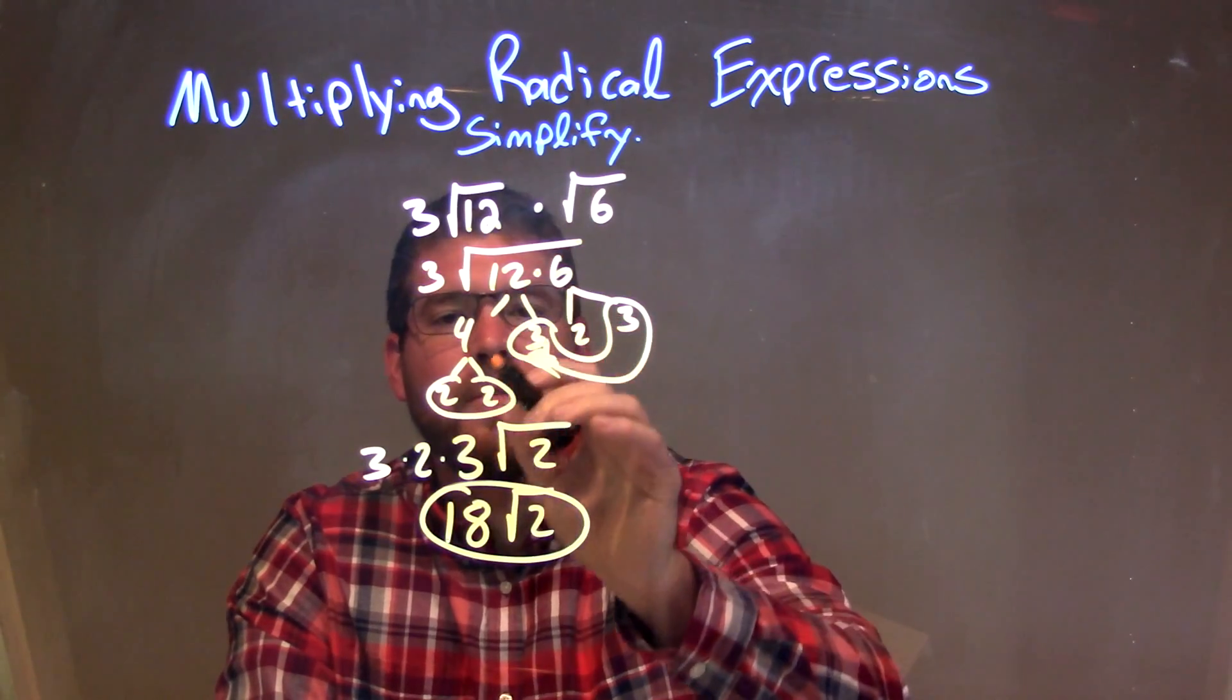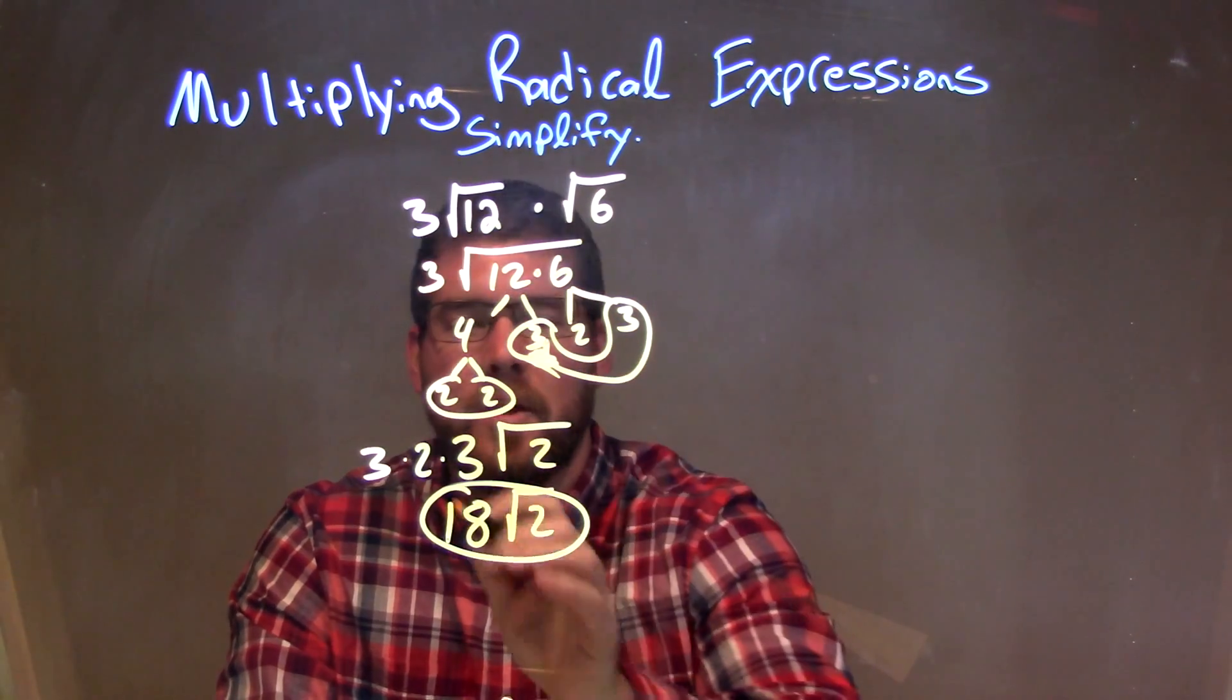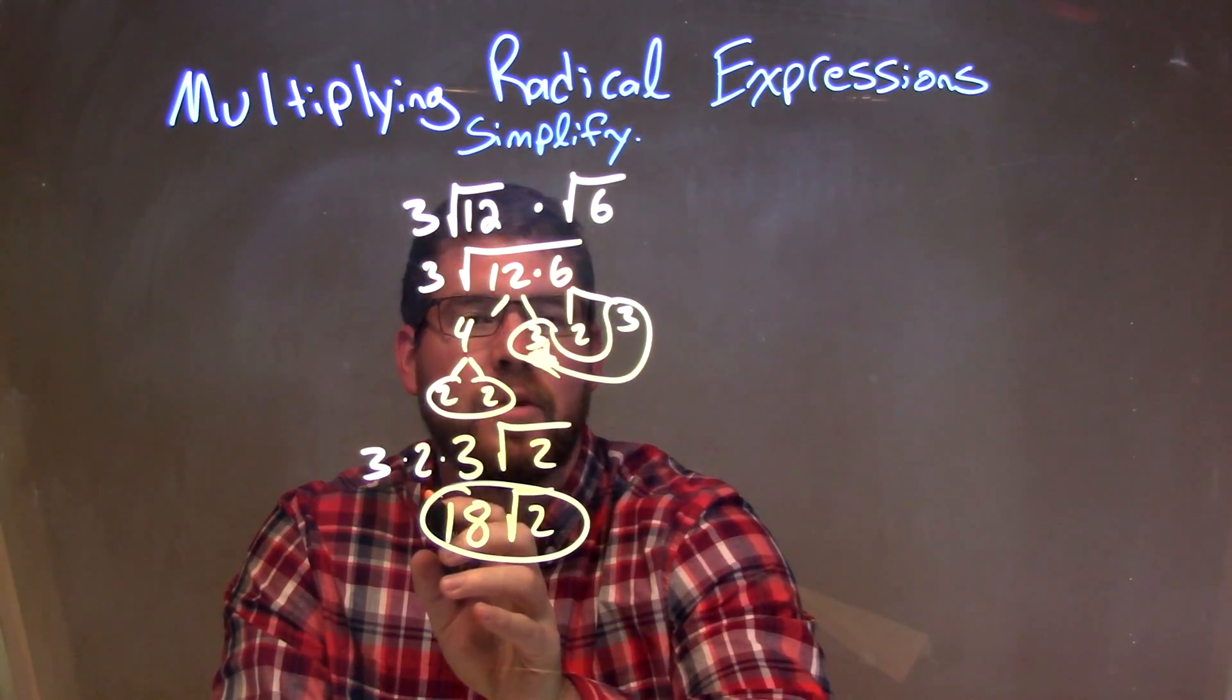Then we broke them down: 12 to be 2 times 2 times 3, and 6 to be 2 times 3. So we circled our pairs. Pairs are represented by a single number outside the square root.